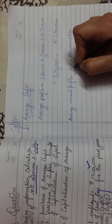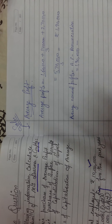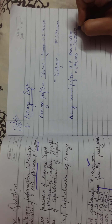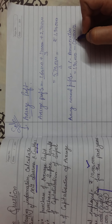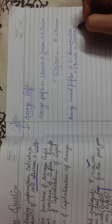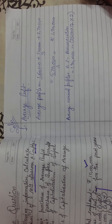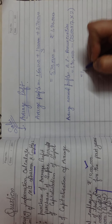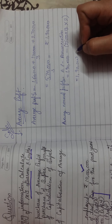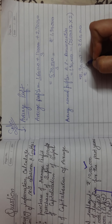Average normal profits equal average profits minus remuneration. Average profits are one lakh ninety thousand. Remuneration is twenty-five hundred per month per partner — twenty-five hundred multiplied by twelve months multiplied by two partners — equals rupees sixty thousand. So average normal profits are one lakh ninety thousand minus sixty thousand, which is rupees one lakh thirty thousand.